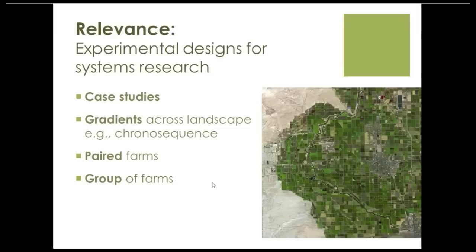Maybe I've convinced you of the reasons to go on-farm, but how can we do that? When we see a site in southern California with many different fields, it's really complex. You can choose different gradients — perhaps a chrono sequence, which means finding farmers who have been doing a different practice for different amounts of time. For example, organic farmers who have been carrying out organic management practices for 20 years, 10 years, and 2 years, giving you a gradient of organic management to examine how long before practices start changing soils and other system properties.